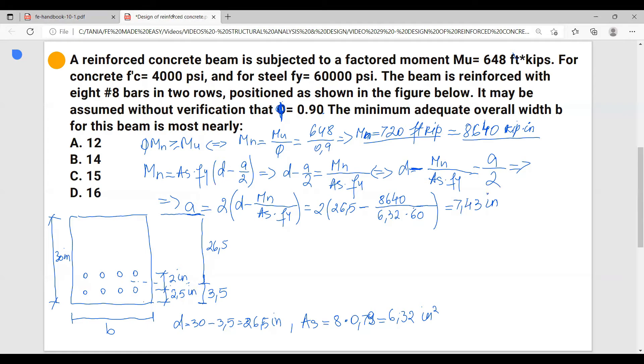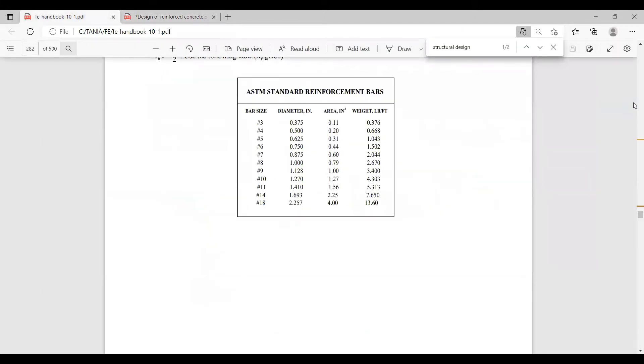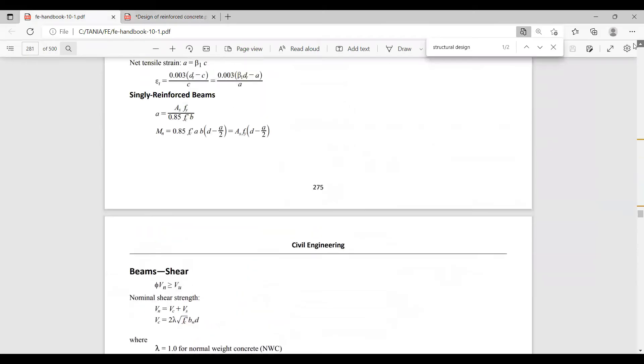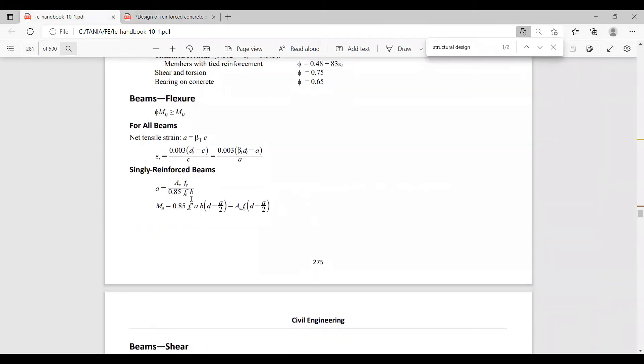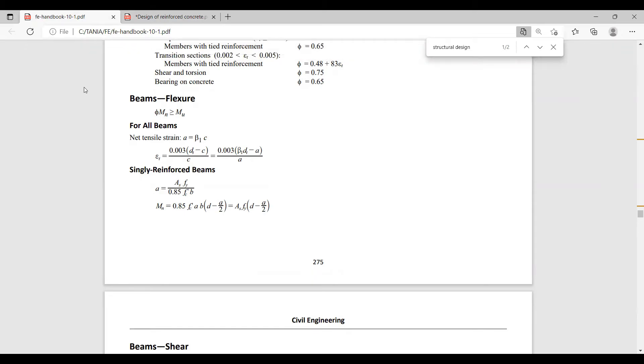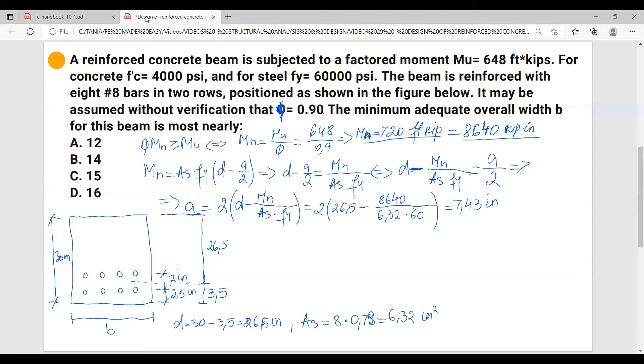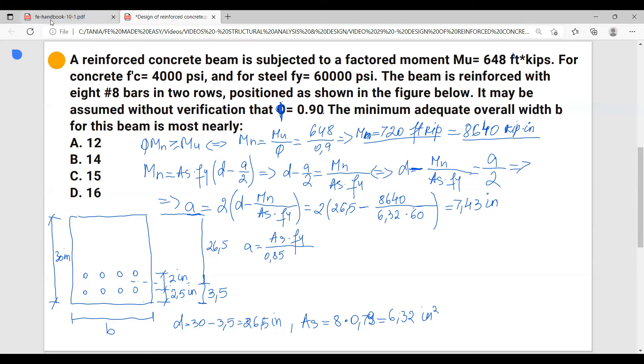Okay, now with a known, we can use the formula of a to calculate the b that the problem is asking us to calculate, the width of the beam. So let's use this formula: a equals As·fy over 0.85·fc'·b.